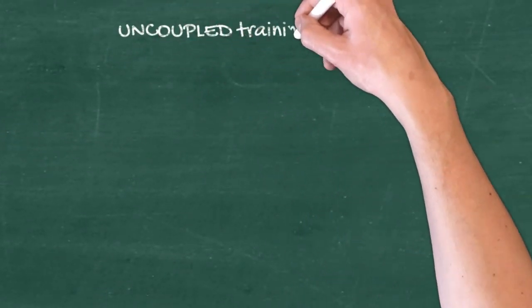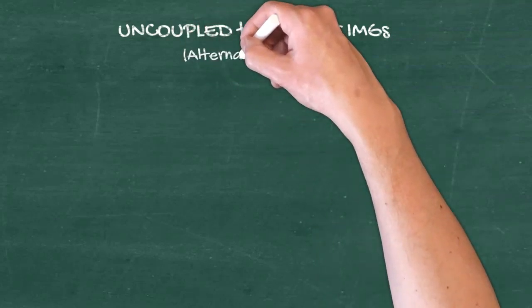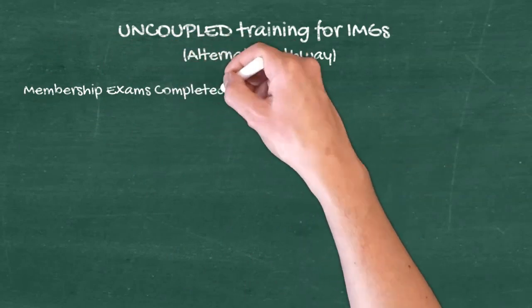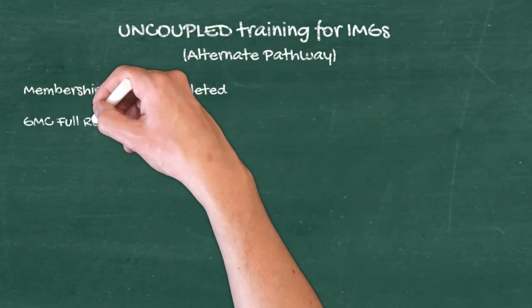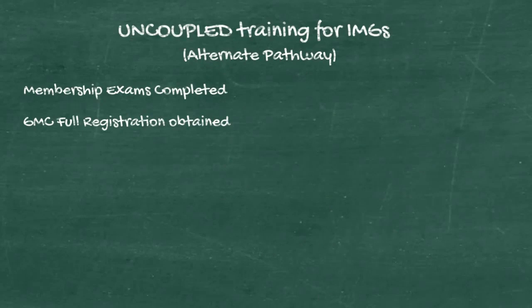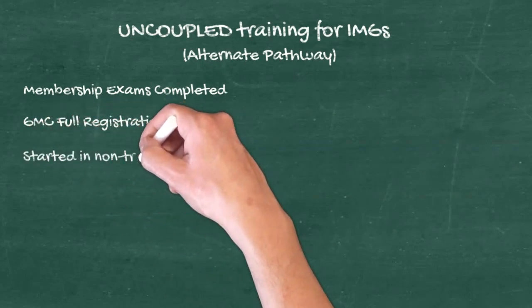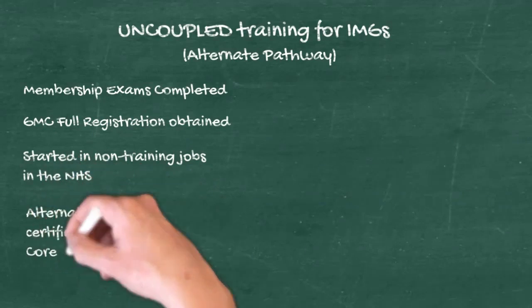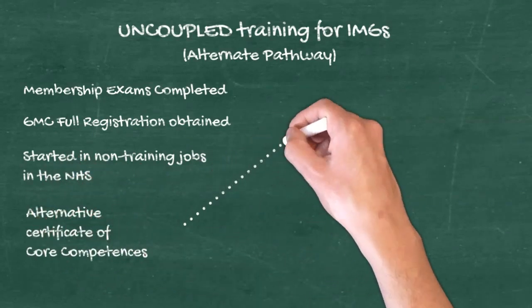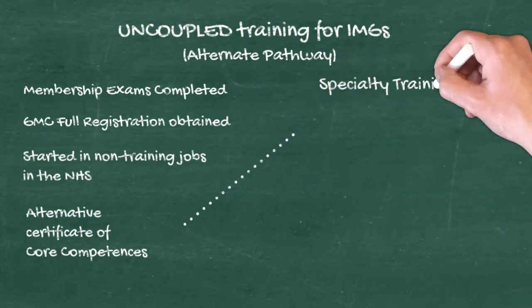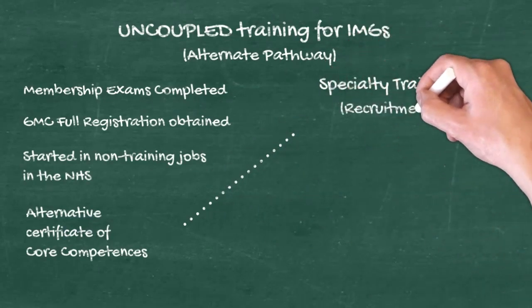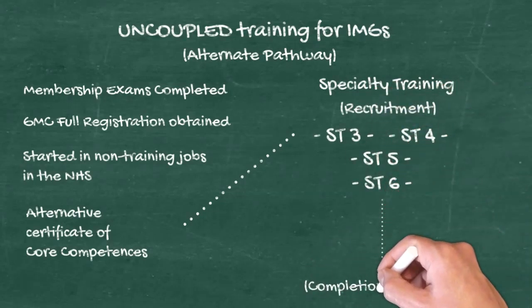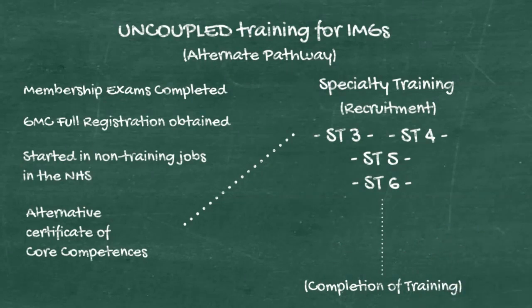One thing can be different for IMGs: if you have already completed MRCP or MRCS in your home country, you may be found overqualified to apply for core level training — which is the case for surgery for many IMG doctors. In that case, you can take an alternate pathway. You get GMC registration and work towards obtaining an alternate certificate of core competences, which you need before applying for specialty training, which then follows the same path as the second portion of the uncoupled training.